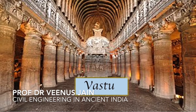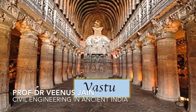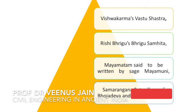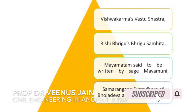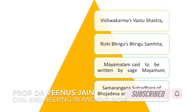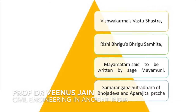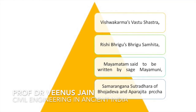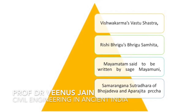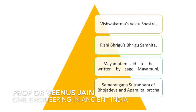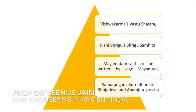The details of Vastu have been rigorously dealt with across various ancient treatises like Vishkarma's Vastu Shastra, Rishi Prabhu's Prabhu Sahita, Maya Mattam said to be written by sage Maya Muni, Samarang Sutradhara of Bhojadev, and Aparaj Tipraj. These technical treatises contain elaborate descriptions on the aspects of architecture and engineering.